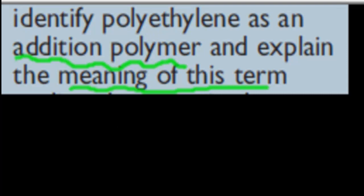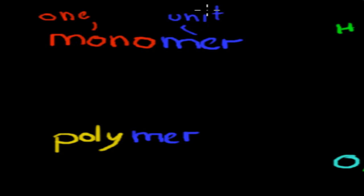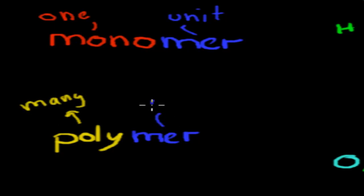First, I'll go over again what monomer meant. Mono comes from the Greek, means one. Mer means unit. So if it's just one unit long, it's called a monomer. Poly means many, and mer still means unit, so a polymer is something that is many units long. A monomer is one unit long; a polymer is many units long.